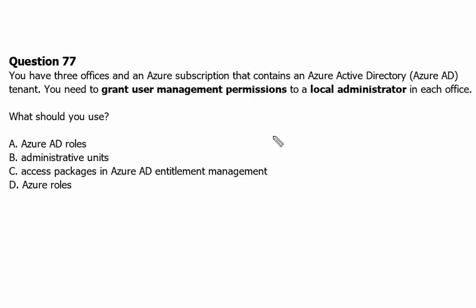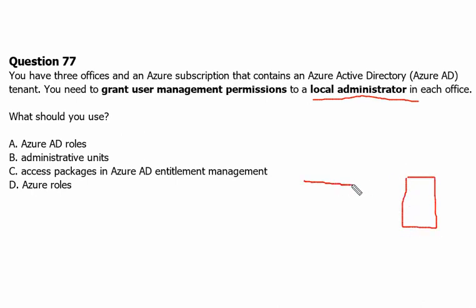Question 77. You have three offices and an Azure subscription that contains an Azure Active Directory tenant. You need to grant user management permissions to a local administrator in each office. What should you do? The scenario is that we have two different offices — for example, office one and office two — with users in each.